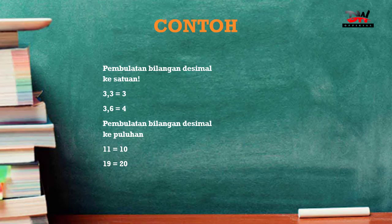19 dibulatkan menjadi 20. Nah di sini ada soal seperti ini: 14,3. Maka kita tidak perlu memperhatikan di belakang koma. Yang harus diperhatikan adalah satuannya. Jika kita membulatkan ke puluhan, maka kita perhatikan satuannya — apakah satuannya lebih dari 5 atau tidak. Dia akan menjadi kosong atau akan bertambah 1.